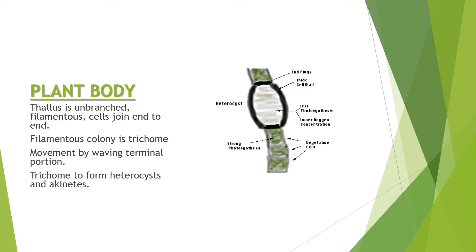Regarding the plant body, the thallus is unbranched — it has no branching, it is just filamentous, with cells joined end to end. This filamentous colony is known as a trichome — a type of colony in which cells are joined one to the other end to end, forming filaments.